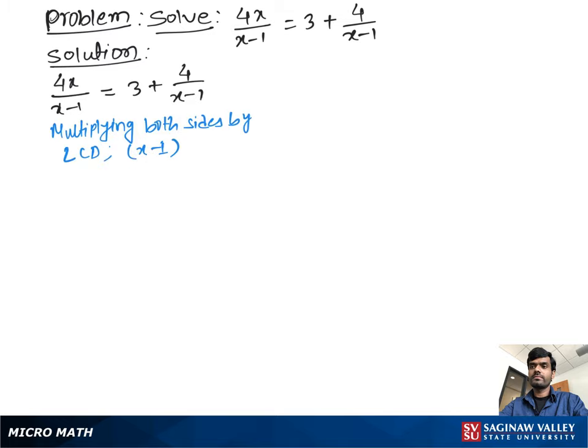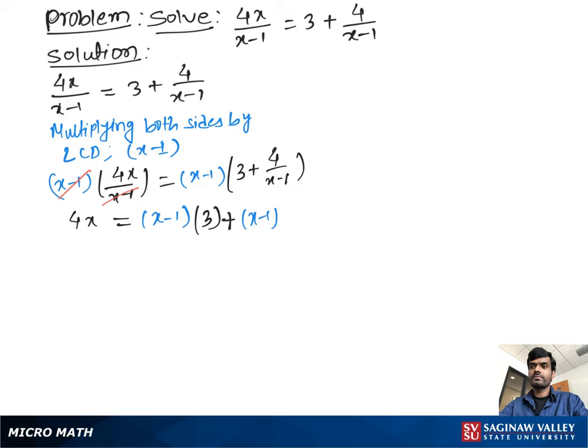Now to solve this problem, we multiply both sides by the lowest common denominator x minus 1. So we can write x minus 1 times 4x over x minus 1 is equal to x minus 1 times 3 plus 4 over x minus 1. Now we can see x minus 1, x minus 1 cancel out. So we get 4x equal to, now using the distributive property, we can write x minus 1 times 3 plus x minus 1 times 4 over x minus 1.